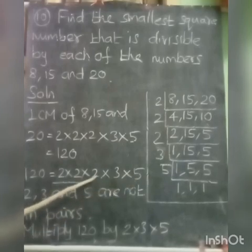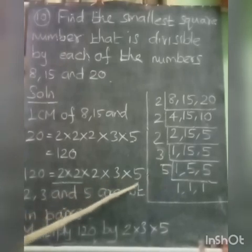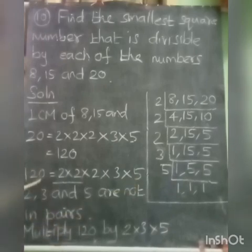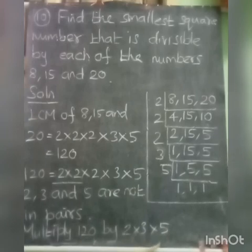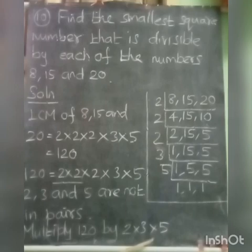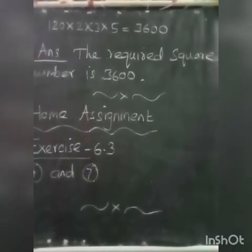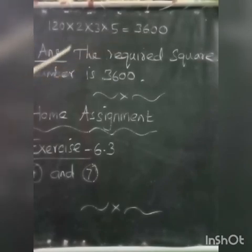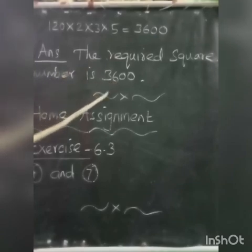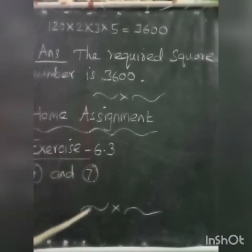Now write 120 as the product of prime factors: 2 into 2 into 2 into 3 into 5. Here 2, 3, and 5 are not in pairs. So multiply 120 by these 3 unpaired prime factors: 120 into 2 into 3 into 5 is equal to 3600. The required square number is 3600. Home assignment: exercise 6.3, fourth and seventh sums. Thank you.